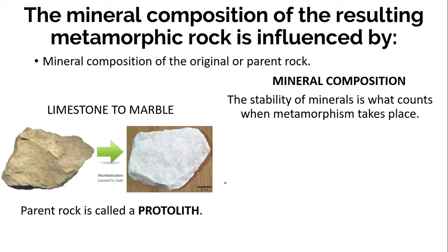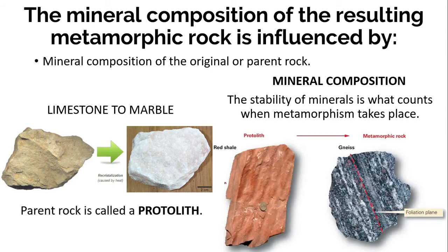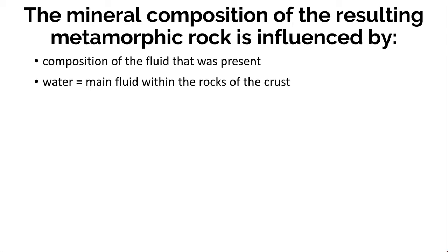When a rock is subjected to increased temperature and pressure, certain minerals will undergo chemical reactions and turn into new minerals, while others might just change their shape. For example, red shale contains clay, quartz, and iron oxide. When it undergoes intense metamorphism, it may change into gneiss containing minerals such as pietite, feldspar, quartz, and purple garnet. Remember that water is the main fluid within the rocks of the crust.